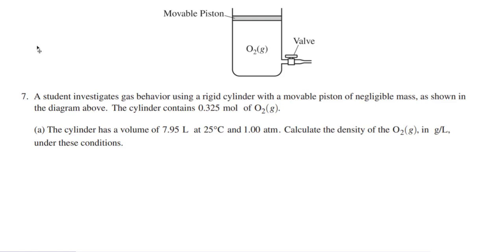The student investigates gas behavior using a rigid cylinder with a movable piston of negligible mass. The cylinder contains the number of moles. So right away, my students right away thought, I'm going to use PV equals nRT. Why? Because they see the number of moles, they see liters, they think something's going to happen. And you can see right away, we want to know the density.